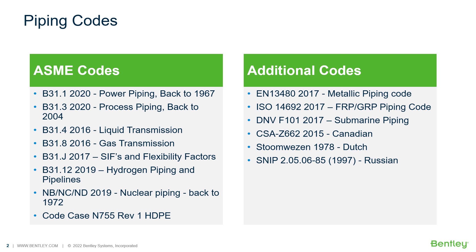Some additional codes we have are EN13-480 for metallic piping, ISO 14692 for FRP and GRP piping, DNV-F101 for submarine piping, and CSA Z662 for underground piping.